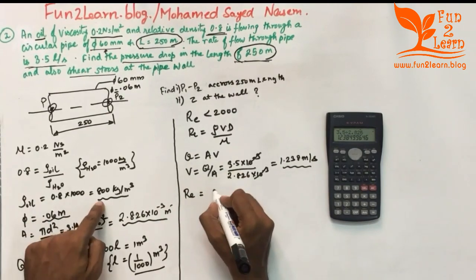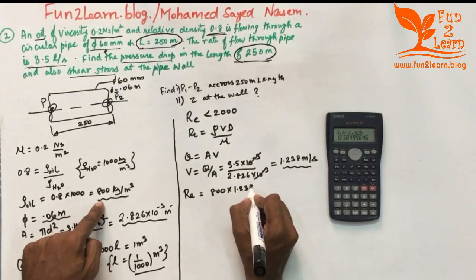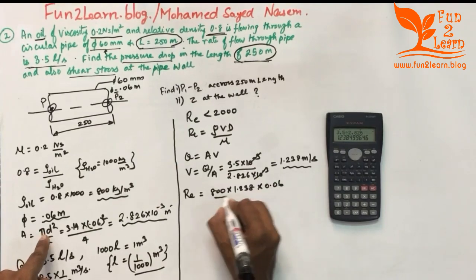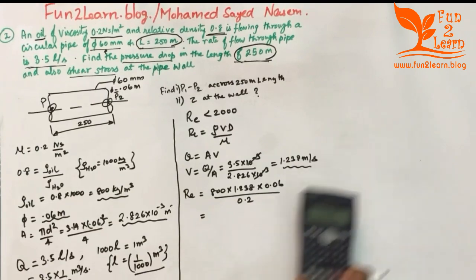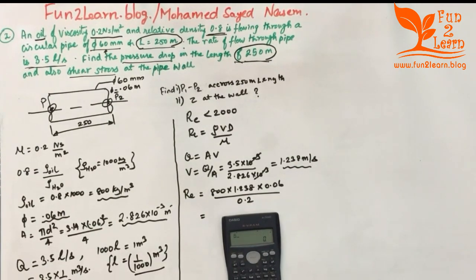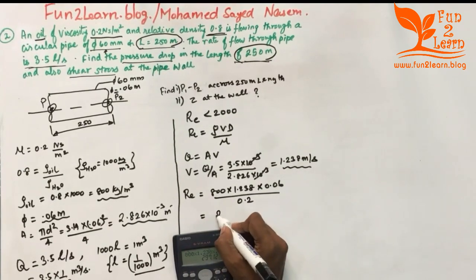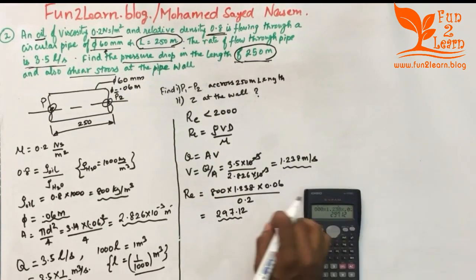Reynolds number = (800 × 1.238 × 0.06) / 0.2 = 297.12. Since the Reynolds number is approximately 297, which is less than 2000, the flow is confirmed as laminar, and we can proceed with the Hagen-Poiseuille equation.